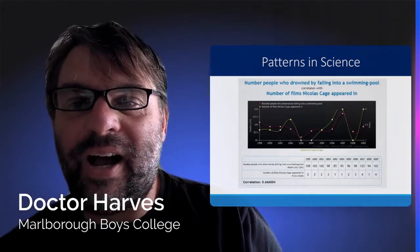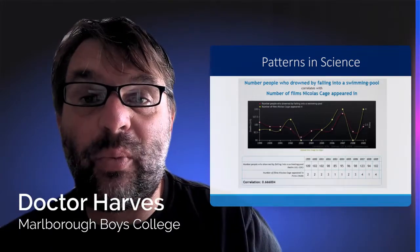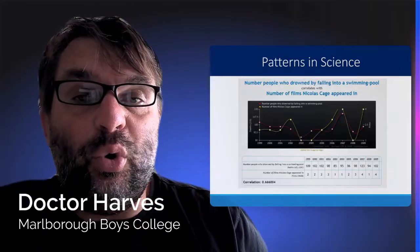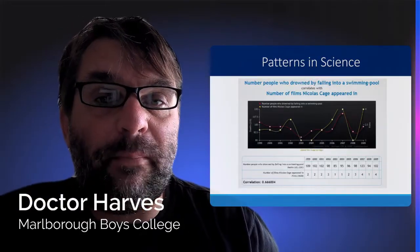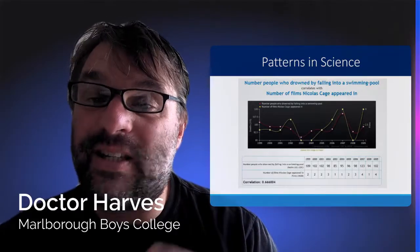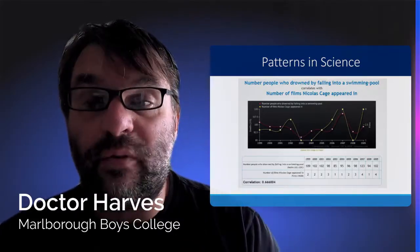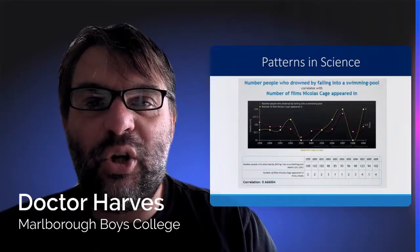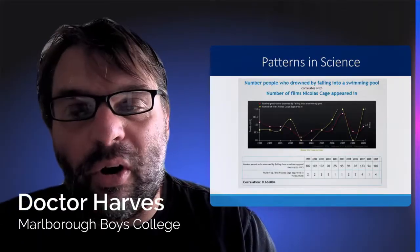In terms of patterns in science, here are a couple of patterns that we see: the number of people who drown after falling in a swimming pool and the number of films that Nicolas Cage has appeared in. There's a correlation there, about 0.6 to 0.7, which is a positive correlation. So you can clearly see there is some sort of relationship.